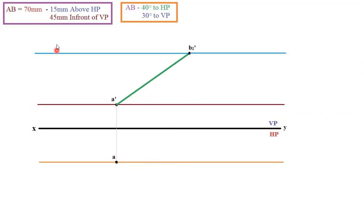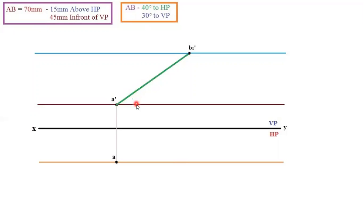The next step is drawing the true length. They give the true length as 70mm. From A dash, draw a 70mm line at the given angle. The angle is clearly given: 40 degrees to HP. So keep your protractor at A dash, set the angle to 40 degrees, and draw a line. The length of the line will be 70mm and at the end you will get a point. Name that point as B1 dash. So A dash to B1 dash is your true length of 70mm, drawn at 40 degrees.